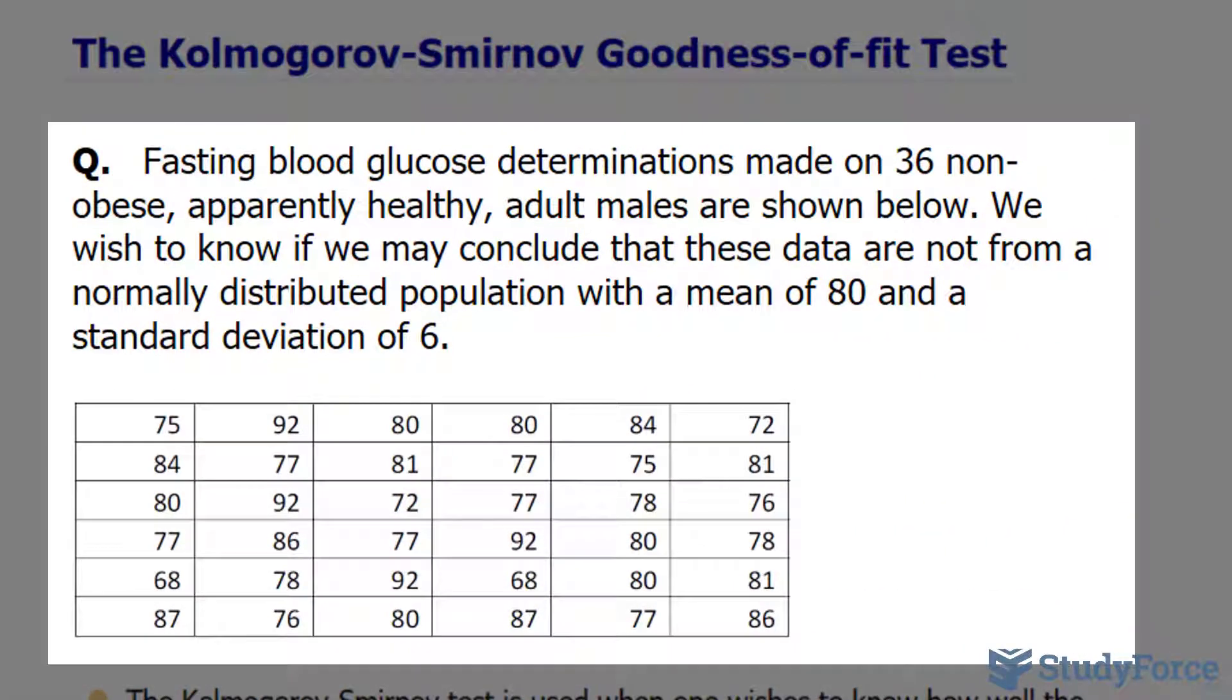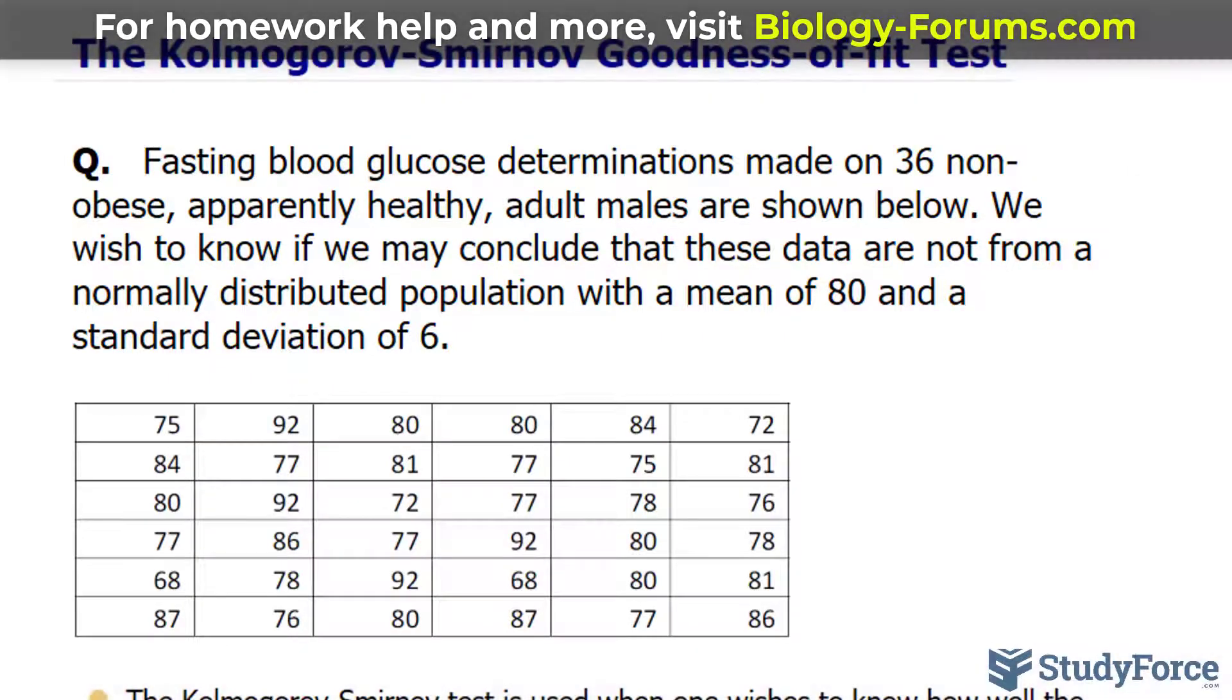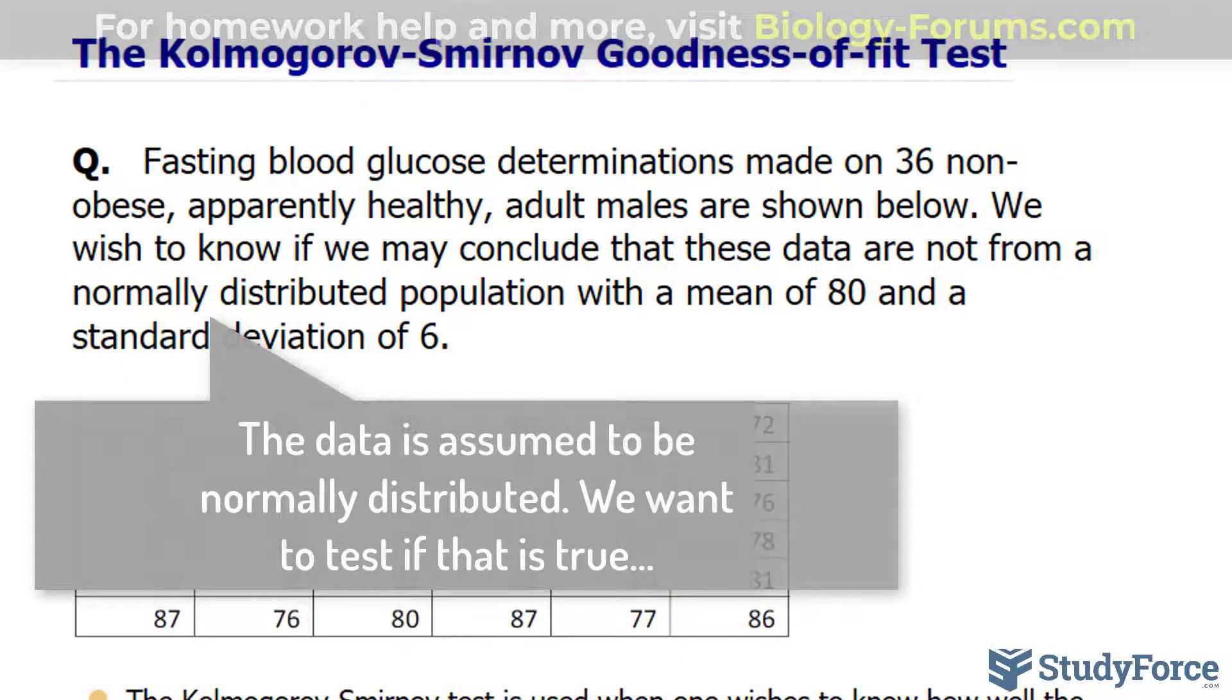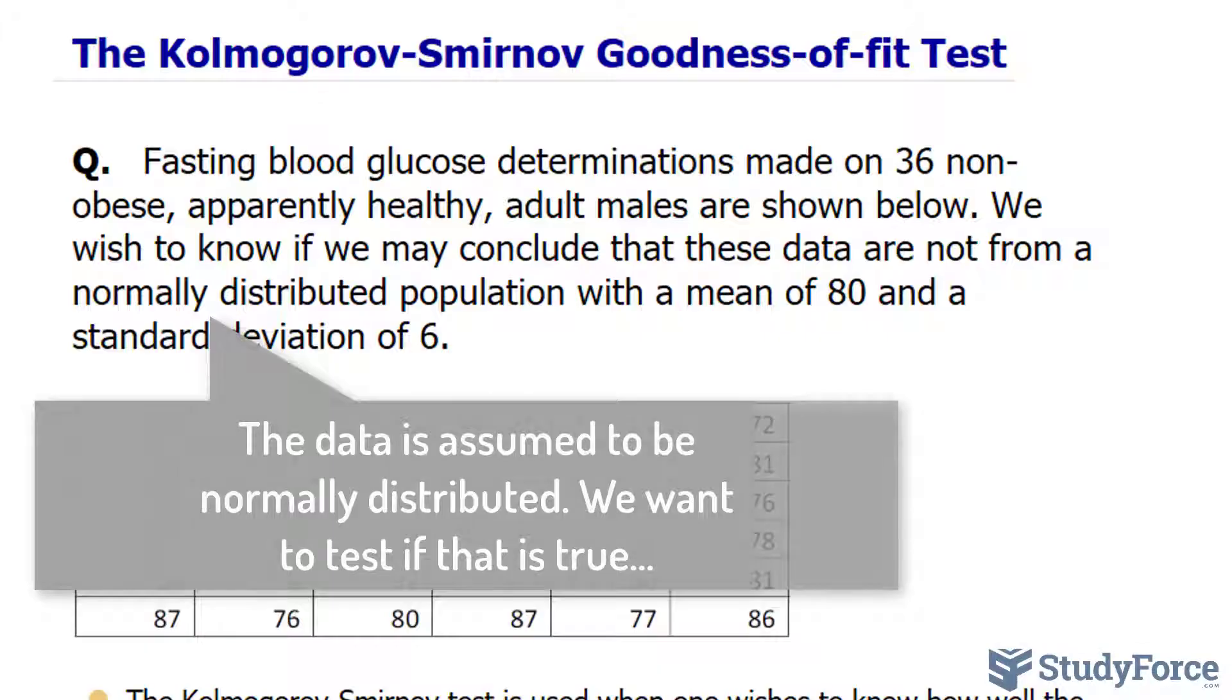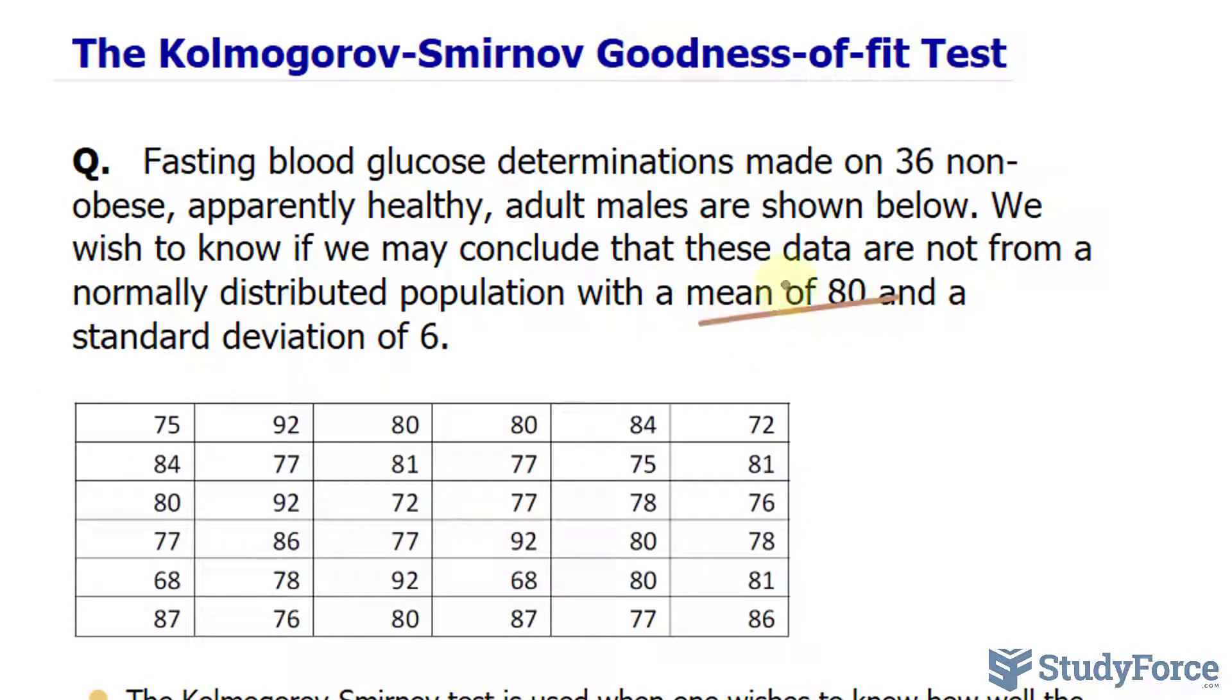Fasting blood glucose determinations made on 36 non-obese, apparently healthy adult males are shown below. We wish to know if we may conclude that these data are not from a normally distributed population with a mean of 80 and a standard deviation of 6. These values will be important later on.